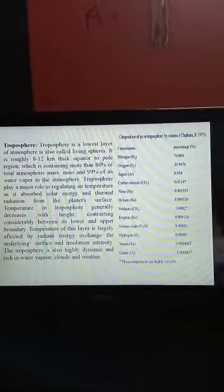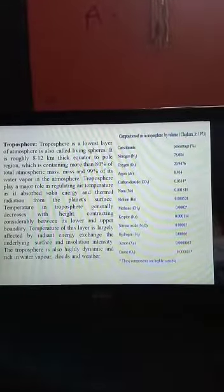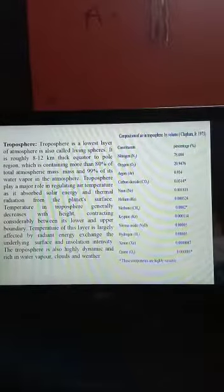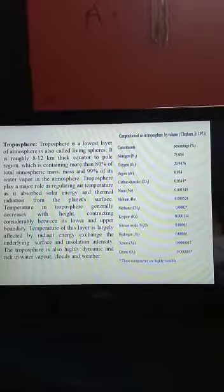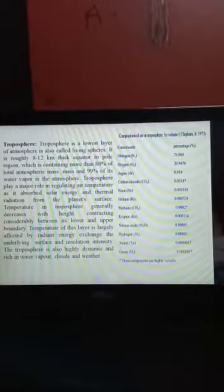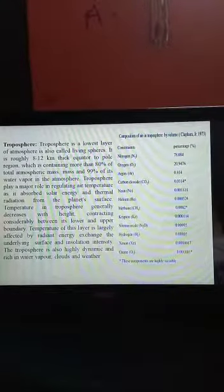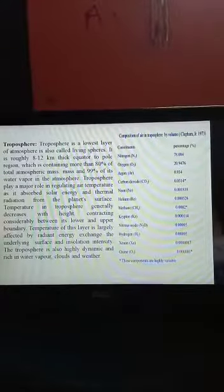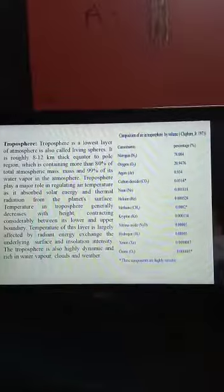Temperature in troposphere generally decreases with height, contracting considerably between its lower and upper boundary. Temperature of this layer is largely affected by radiant energy exchange, the underlying surface, and insulation intensity. The troposphere is also highly dynamic and rich in water vapor, cloud, and weather.